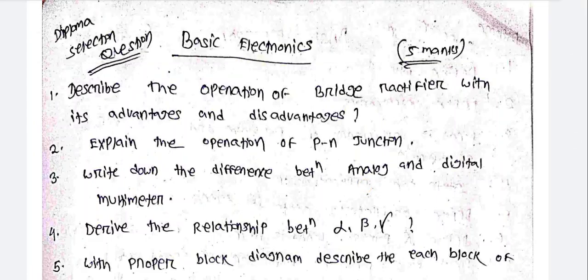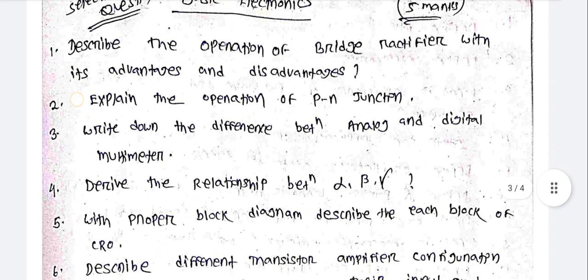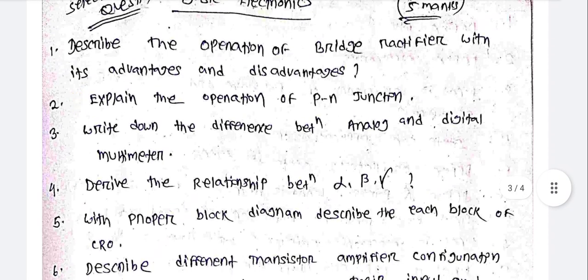Basic Electronics Diploma selection questions. If you have Basic Electrical and Electronics in the first semester, you will find it in the second semester. Marks distribution: 5-10-10-10.